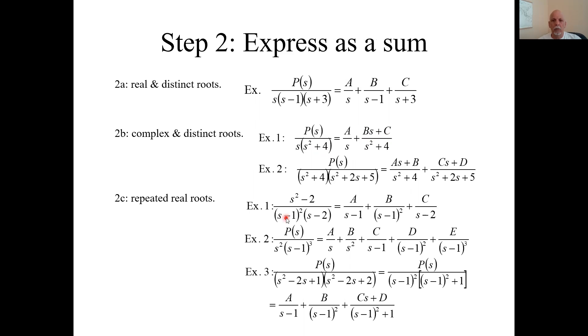When you have repeated real roots, like in this example here, this guy's repeated, it can help you find the B, or the coefficient corresponding to the highest power of that term, but not the A. So in this case, you could find this B and this C, because this guy's distinct, can't find the A. So you're still stuck with equating numerators to find that A.